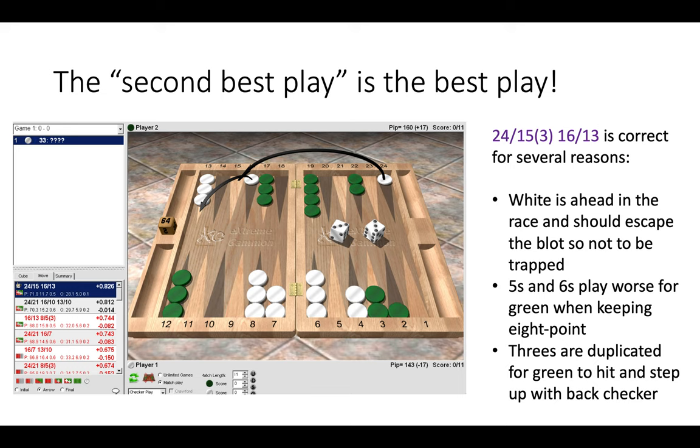Also, by keeping the eight point, fives and sixes play a lot worse for green. And by moving that checker from the 24 to the 15 point, threes are duplicated for green to step up and escape our home board and also to hit us in the outfield. So the second best play is the best play. Look for other options. Use your clock time. Evaluate.